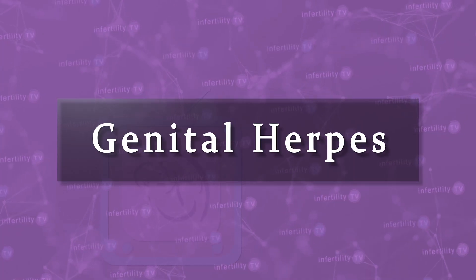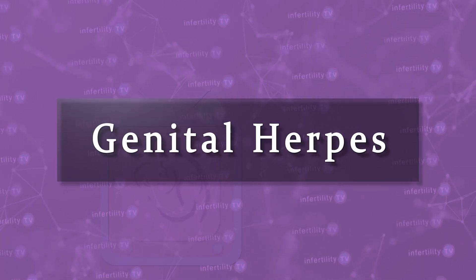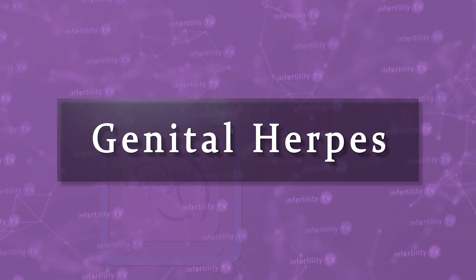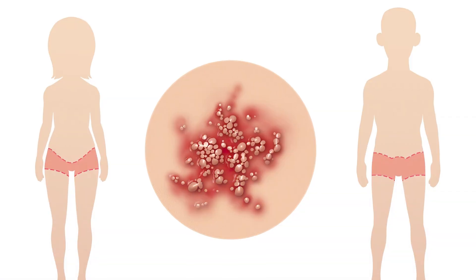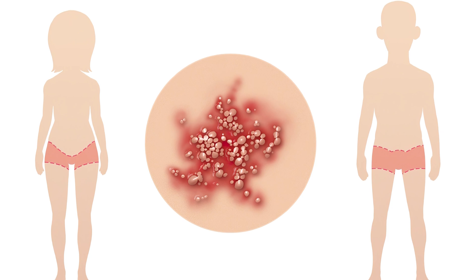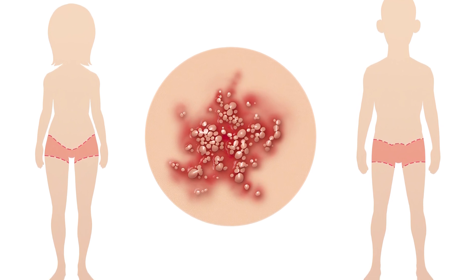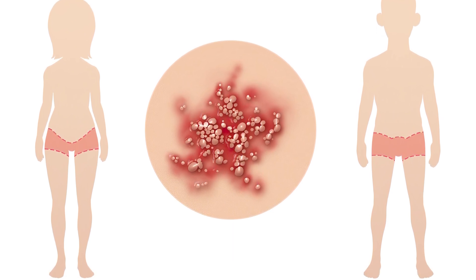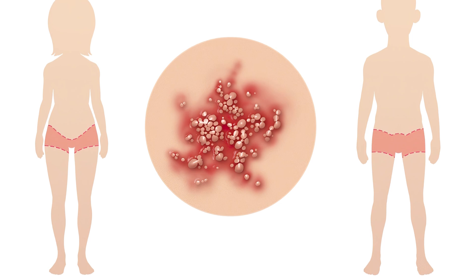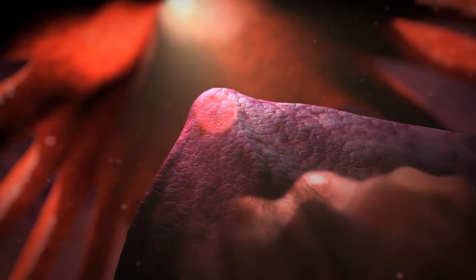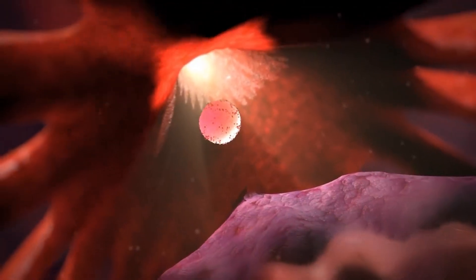The second most common sexually transmitted viral infection is herpes. Herpes infection does not damage the fallopian tubes or cause scar tissue. However, herpes can cause painful blisters which can cause people to avoid sexual intercourse during an outbreak. If this happens at the time of ovulation, this can interfere with attempts to conceive. There are medications to reduce the frequency of herpes outbreaks which may allow people more flexibility when trying to conceive.